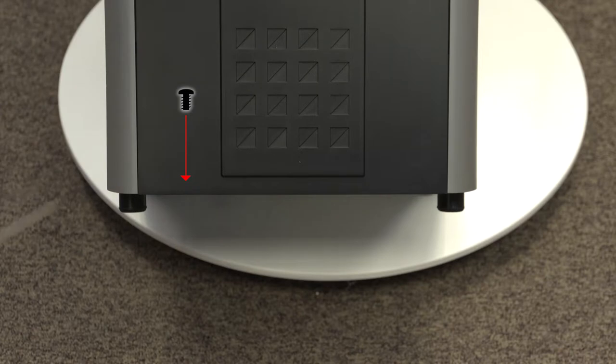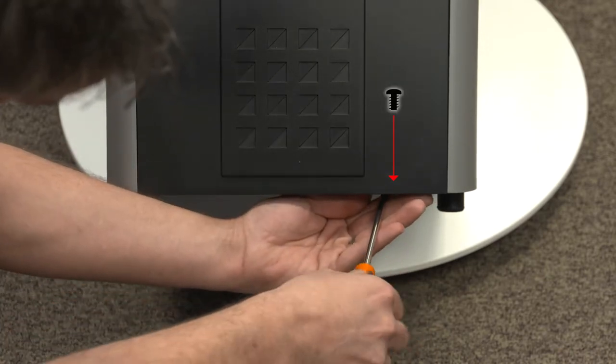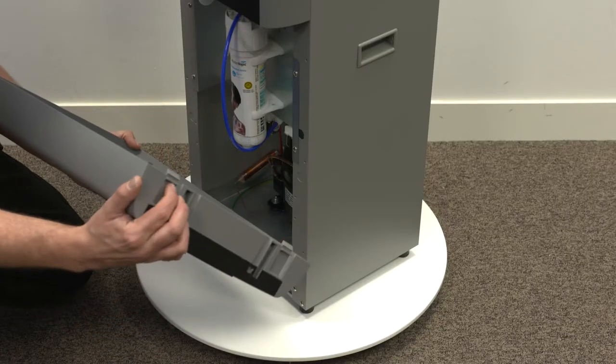Remove the front down panel by undoing the two fixing screws located under the front edge at the bottom and depressing the retaining clips shown here using your index fingers.